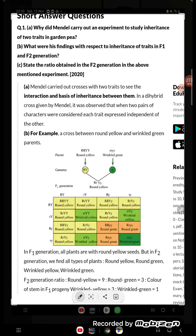Hi students, let's try to understand one problem. The problem is: Why did Mendel carry out an experiment to study inheritance of two traits in garden peas? He is studying the inheritance of two traits.